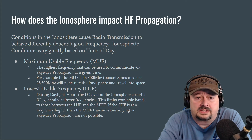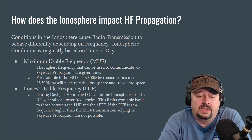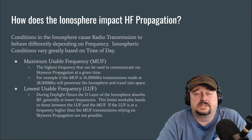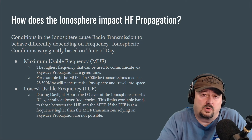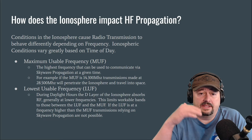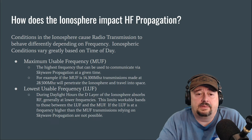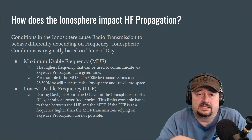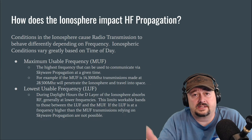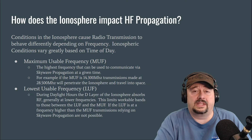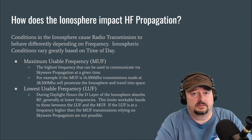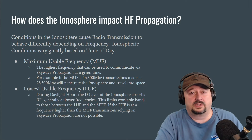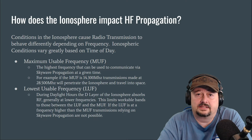Another concept is the LUF — the lowest usable frequency — and this is where the D-layer comes into play. During daylight hours, the D-layer absorbs these signals and limits our workable bands to those between the LUF and the MUF. Anything below the LUF gets absorbed; anything above the LUF but below the MUF will hit the ionosphere and refract back down. If the LUF is higher than the MUF, something unusual is going on in the ionosphere and skywave propagation is not possible.